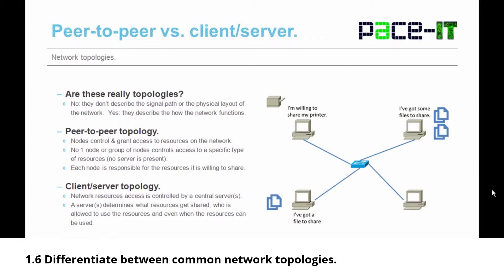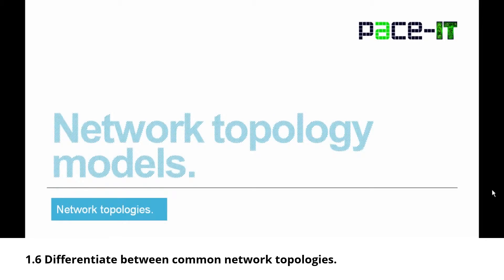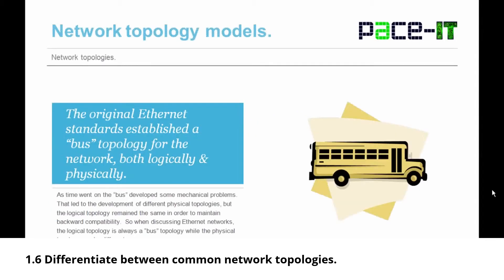Each node is responsible for the resources it's willing to share. A client-server topology differs — network resource access is controlled by a central server or servers. The server determines what resources get shared, who is allowed to use those resources, and even when those resources can be used. In the small office/home office environment, it's common to find a hybrid topology — a combination of peer-to-peer and client-server networking.